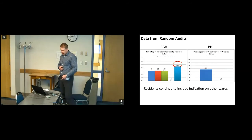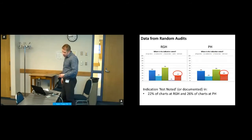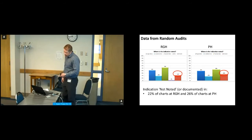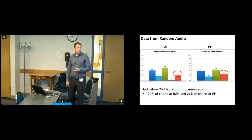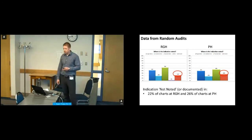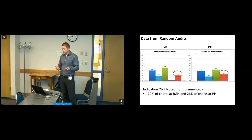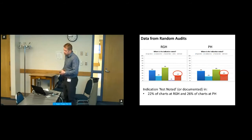Looking at where the indication is documented in the random audit data: at the RGH, 22 percent of patients had no indication noted or documented in the chart at all, and at the Pasqua that number was a little higher at 26 percent.